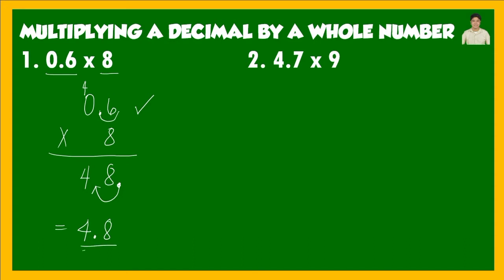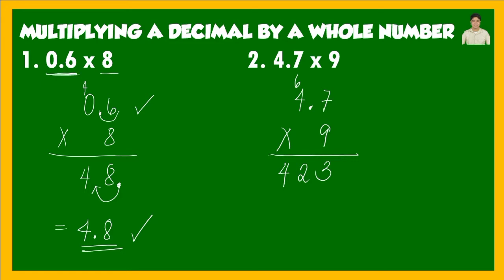Next example: 4.7 times 9, or 4 and 7 tenths multiplied by 9. Write in vertical form: 4.7 times 9. 7 times 9 is 63, write 3 carry 6. 4 times 9 is 36, plus 6 is 42. Our factor 4.7 has 1 decimal place, so we move 1 decimal place to the left. Our final answer is 42.3 or 42 and 3 tenths.